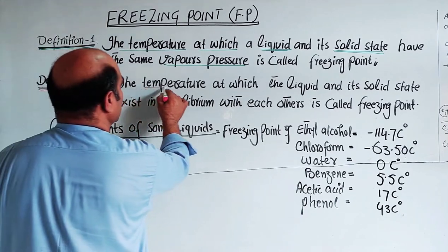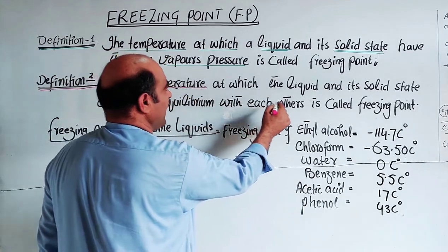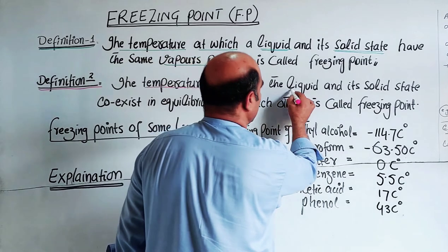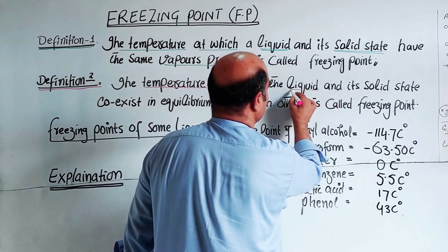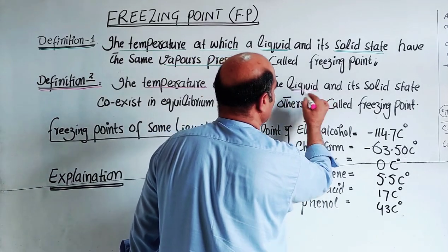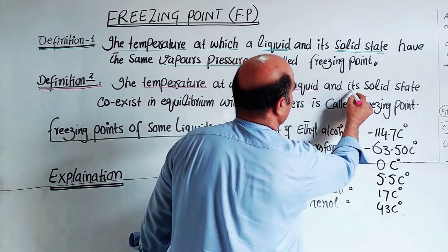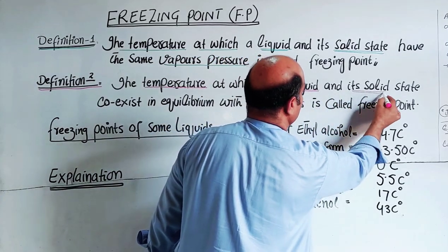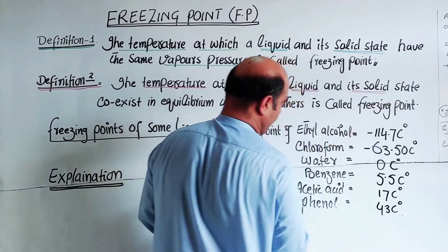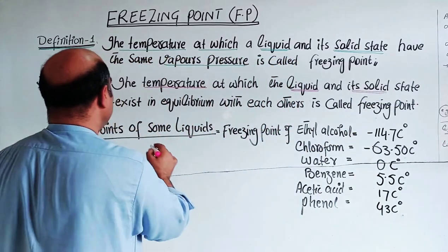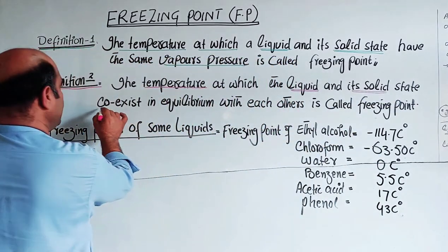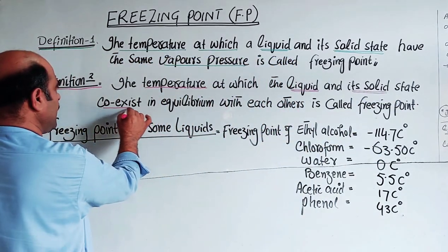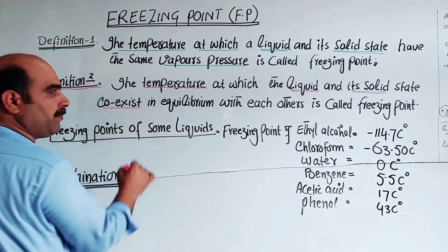Definition number two: the freezing point is the temperature at which the liquid and its solid state coexist — they combinedly exist at the same time in equilibrium with each other.